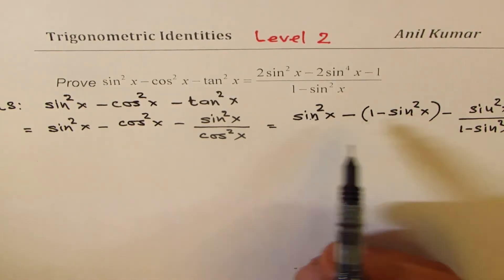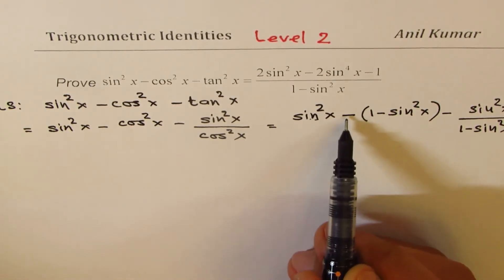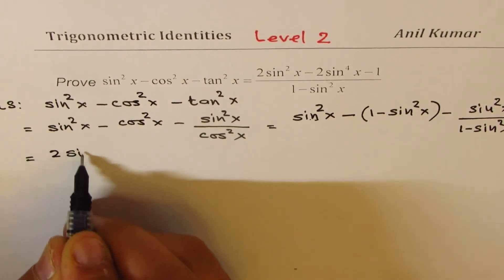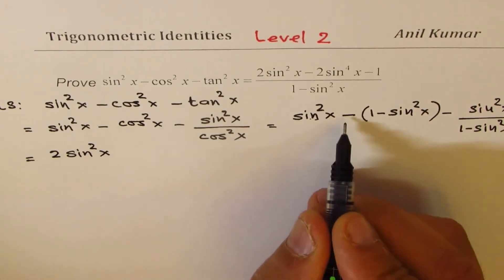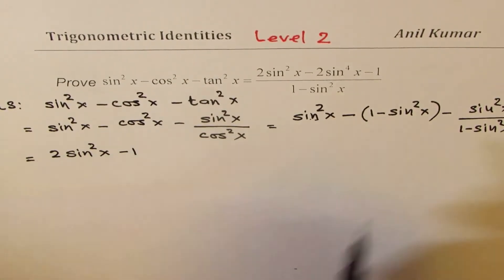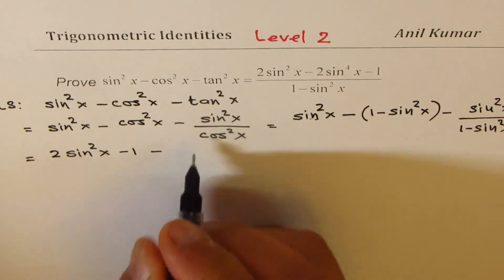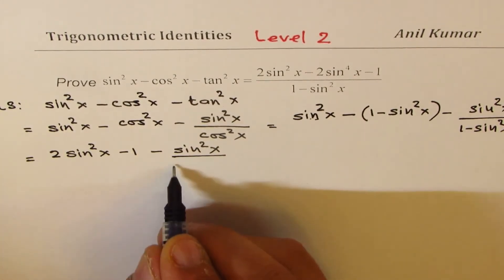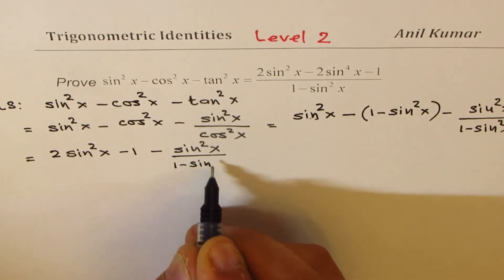So when you open this bracket, you get minus minus s plus, so you get 2 sin² x. Let's write down. So we get 2 sin² x - 1, and we have minus sin² x over 1 - sin² x, correct?